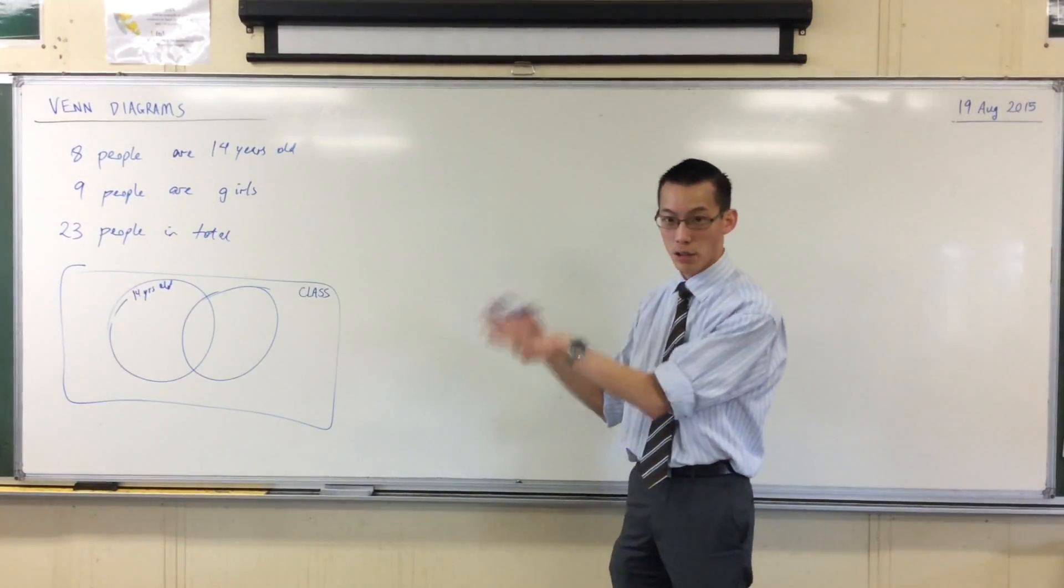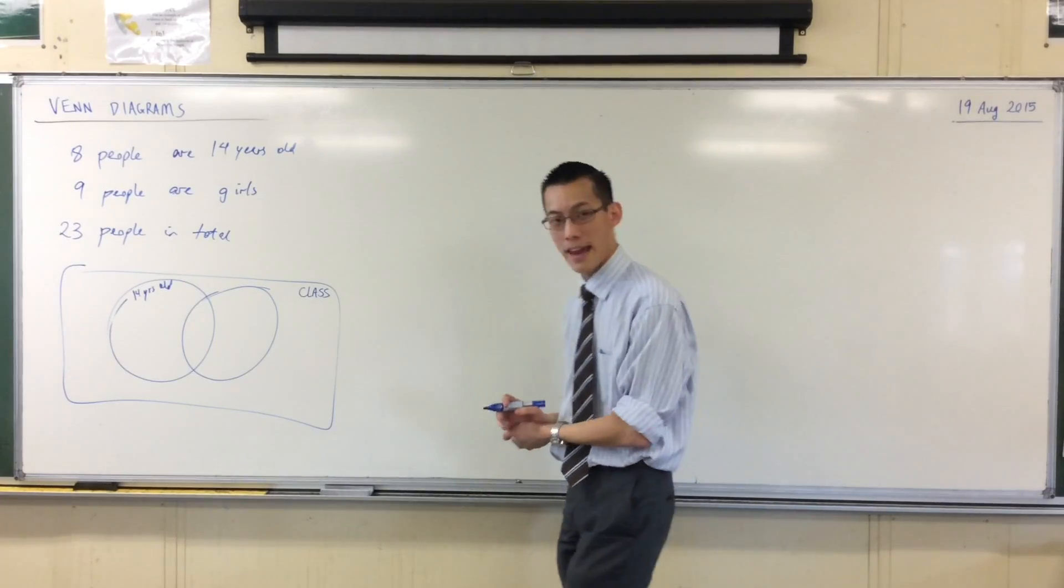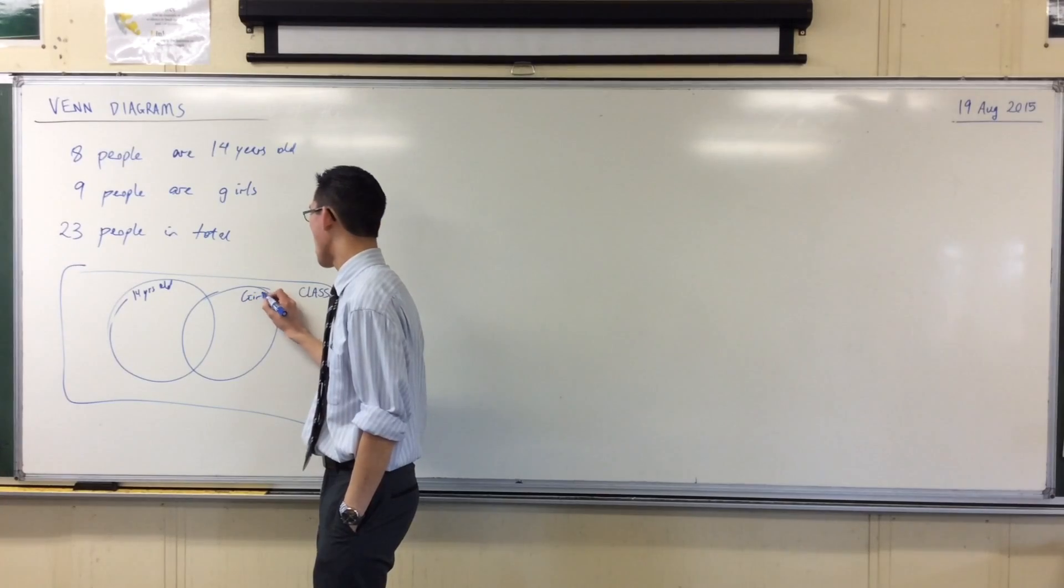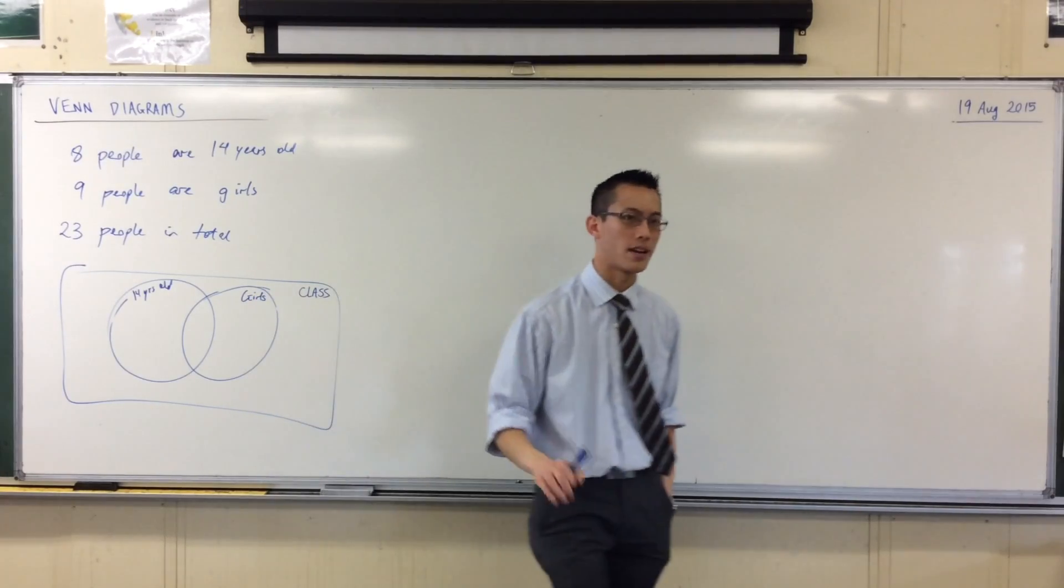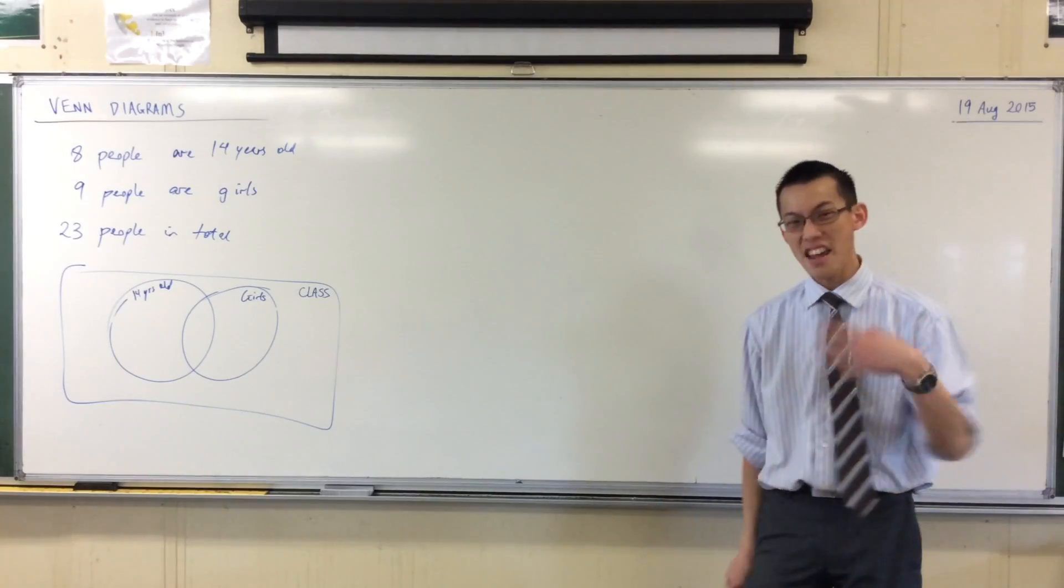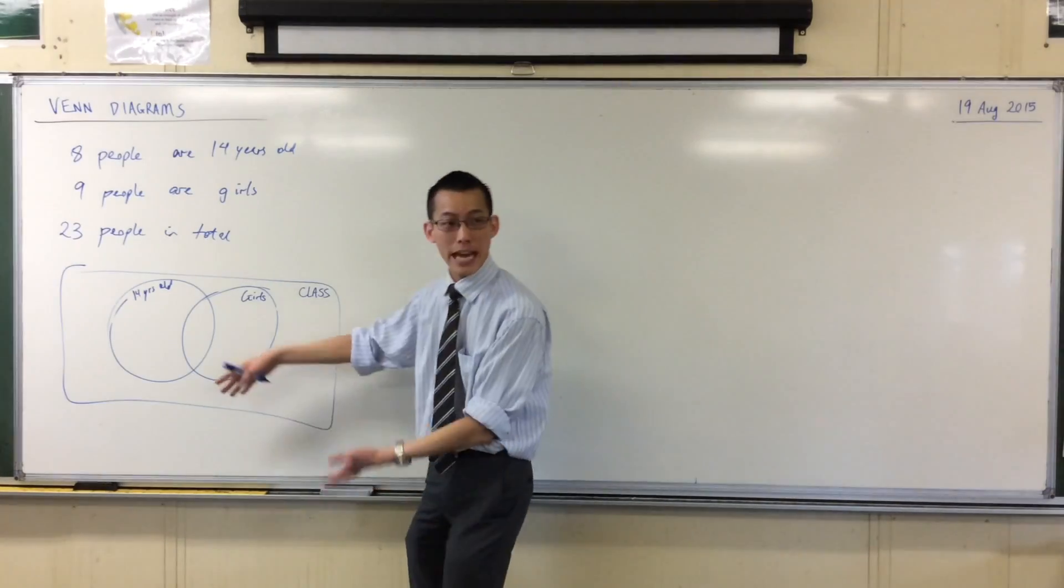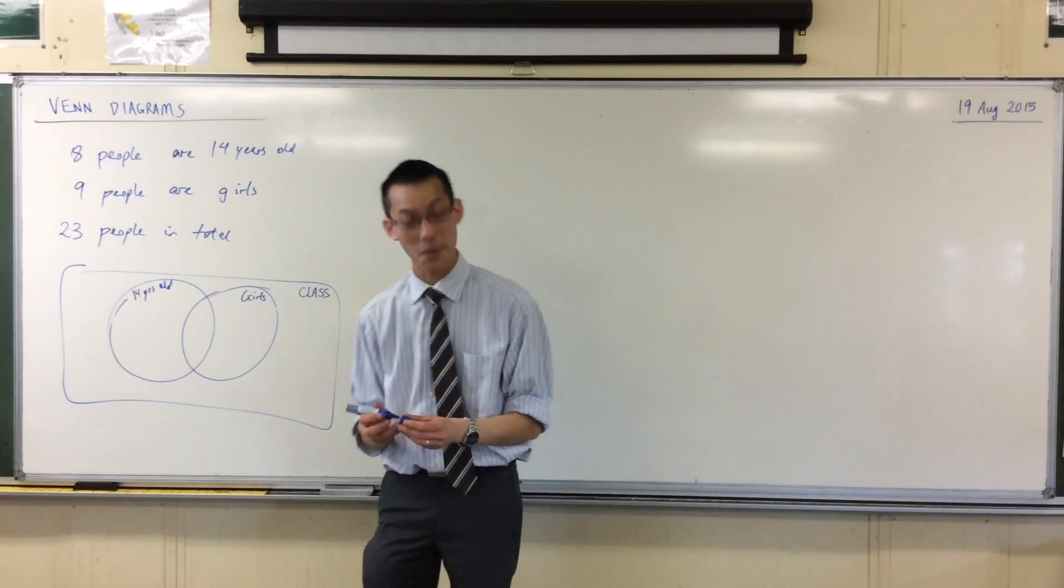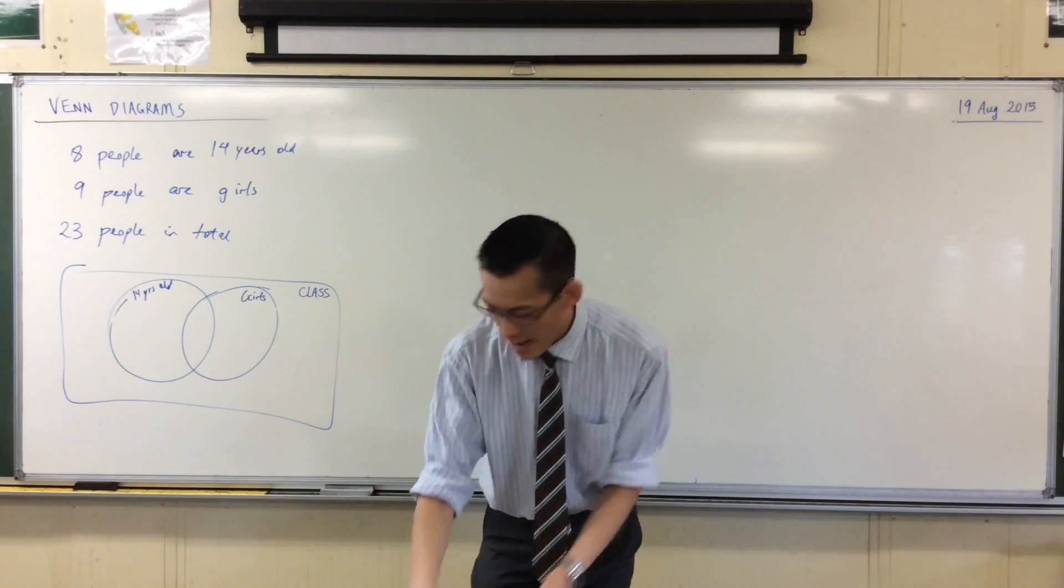That circle is going to include the number of people who are that age, and then over here on my right-hand side I'll have the girls circle. You can see if I wanted to I could put down all the names of people here, but it would get pretty crowded pretty quickly, so I'm going to avoid doing that.